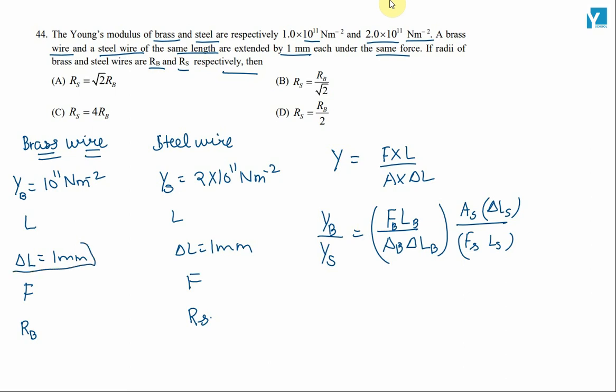We know delta L for brass wire and steel wire are same. So, these terms will get cancelled. Force on both the wires is same, so this will be cancelled. The length of both the wires is same. So, we will get Yb by Ys is equal to area, which is pi Rs square divided by pi Rb square. This implies Rs by Rb will be equal to root 2.